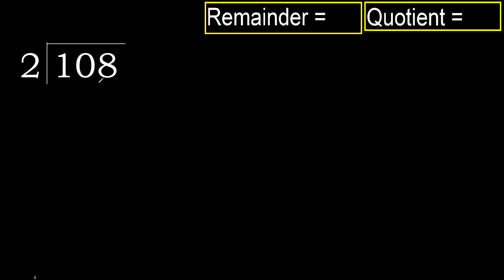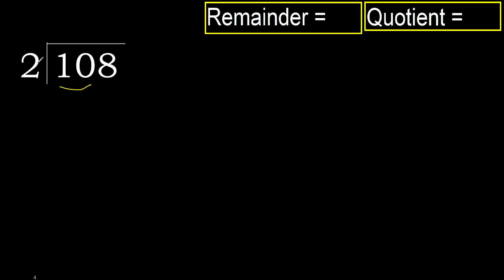108 divided by 2. 1 is less, therefore next. 10 is not less, therefore with 10. 2 multiplied by which number is nearest to 10, but not greater.